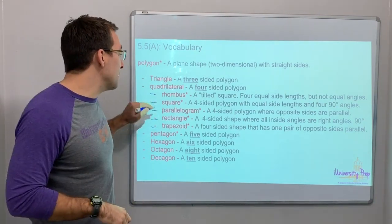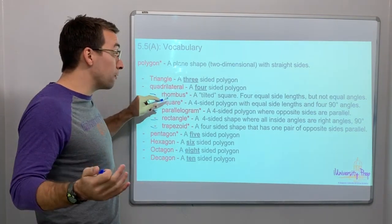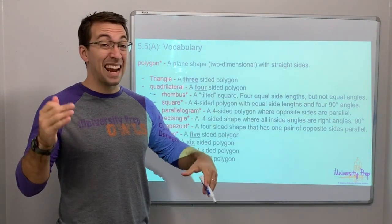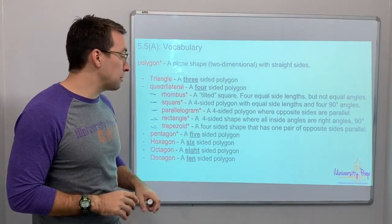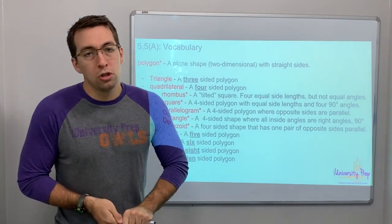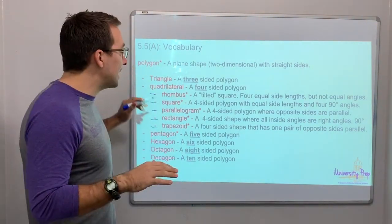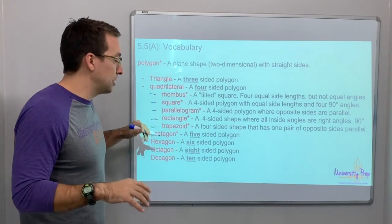A rhombus is a tilted square. A square is a four-sided polygon with equal side lengths and all four 90-degree angles. A parallelogram, a rectangle, a trapezoid. Hugely important - gotta know this vocabulary.